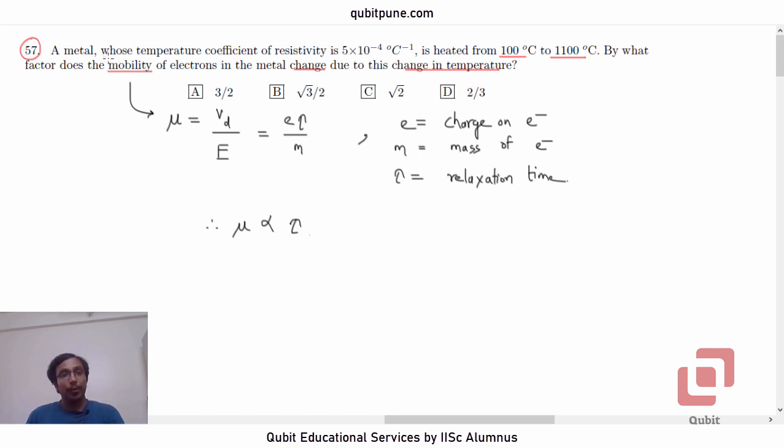Now, in the problem, they have given us the resistivity values. So, let us assume that resistivity rho 2 is the new value and rho 1 is the old value. What is the formula? Rho 2 equal to rho 1 into bracket 1 plus alpha delta T, where alpha is the temperature coefficient of resistivity, our usual formula. They have not given rho 1, so let's calculate the ratio.